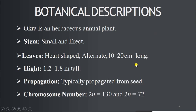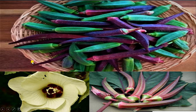Botanical description of okra crop: okra is an herbaceous annual plant. Stem is small and erect; leaves are heart-shaped, alternate, 10 to 20 cm long; height 1.2 to 1.8 m tall. Propagation is typically by seed. Chromosome number is 2n = 130 and 2n = 72. We can see the okra fruits or pods with their flowers — purple, dark, and green colors.